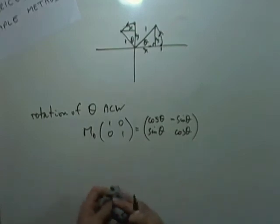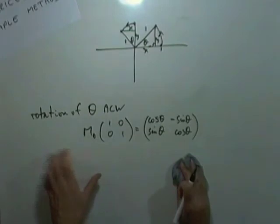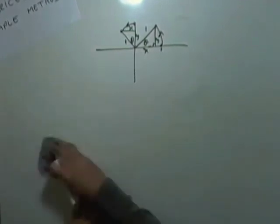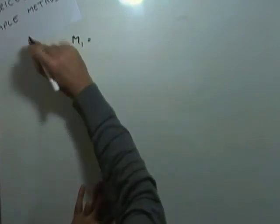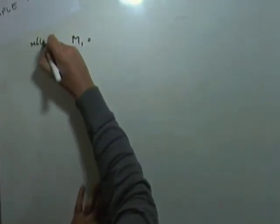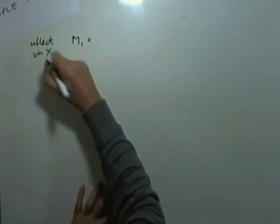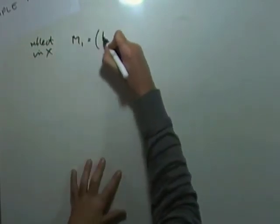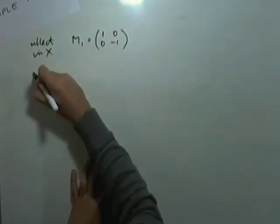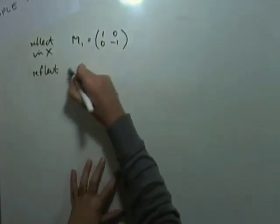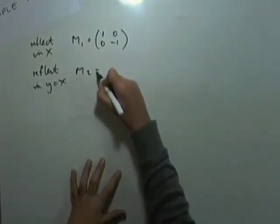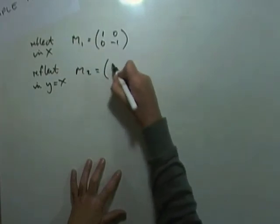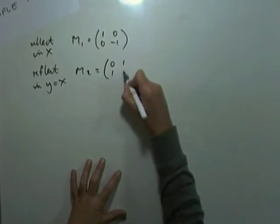And it's just as simple to use it the other way around. If you have the matrix to determine what it does. Especially in terms of when you've got a composition. So what were those again? There was m1 was reflect in x. That was 1, 0, 0, negative 1. There was m2 which was reflect in y equals x. That was m2 as well. m2 equals 0, 1, 1, 0.